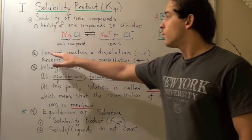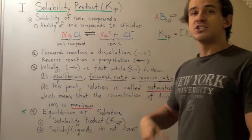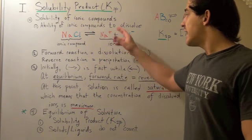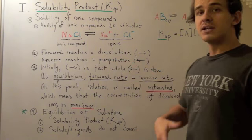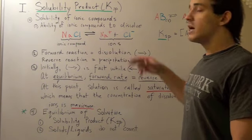This reaction is called the forward reaction, or dissolution. The reverse reaction is just as likely to occur, and that's called precipitation. It's the formation of ionic compounds from its ion form.